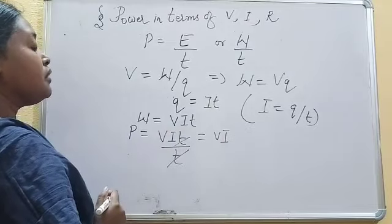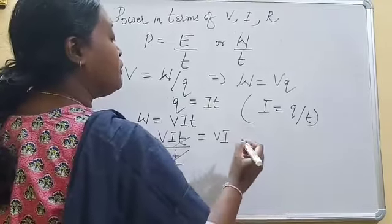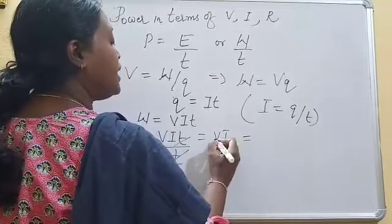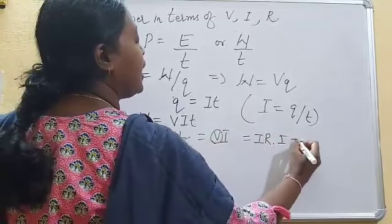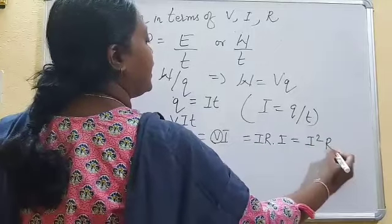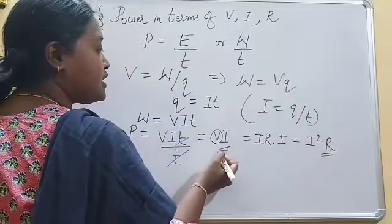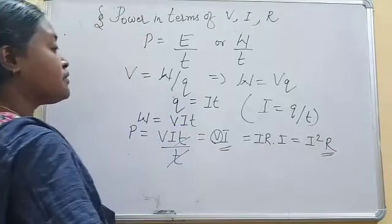Now, according to Ohm's law, we know that V equals I, R. Therefore, in the place of V, we can write I, R. I, R into I, that is I square R. This is another form of the power. First is V, I and the second is I square R.